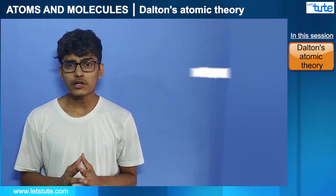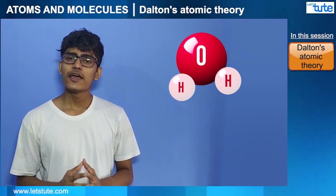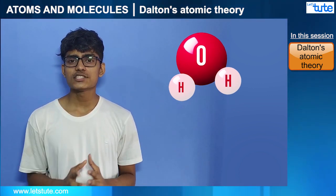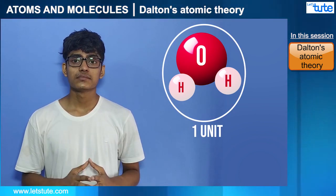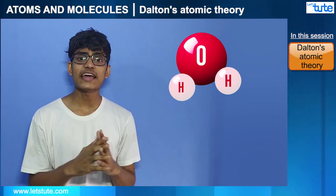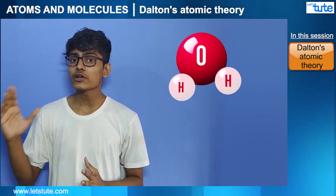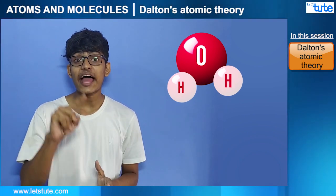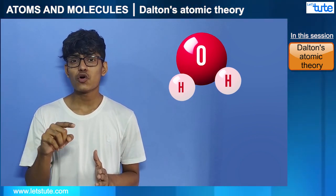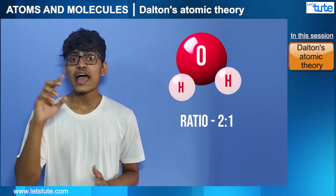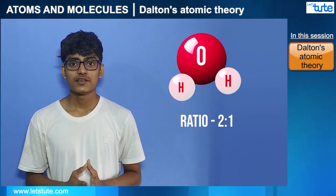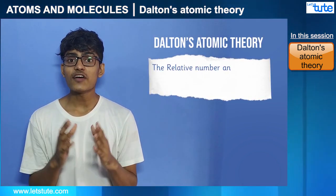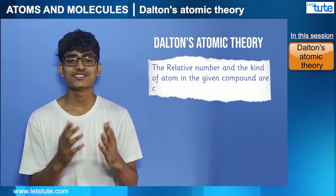If we take a water molecule and look carefully, we know it will have two hydrogen atoms and one oxygen atom — that makes one unit. If we scan the whole water compound, we notice the same combination of hydrogen and oxygen in the ratio of two hydrogen atoms and one oxygen atom throughout. This states the sixth law: the relative number and kind of atoms in a given compound are constant.